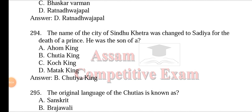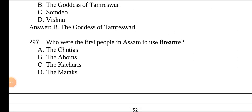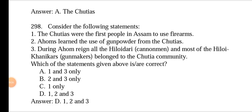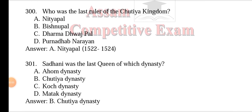The original language of the Sutias is known as the Tibeto-Burman language. The temple of Tamreswari Mai was built by a Sutia king and was dedicated to the goddess Tamreswari. The Sutias were the first people in Assam to use firearms, which later inspired the Ahoms. The Ahoms learned the use of gunpowder from the Sutias. During the Ahom period, most of the Hilloidari cannon men and Hilloy Khanikar gun makers belonged to the Sutia community. The Sutia kingdom was annexed to Ahom territory after the Battle of Mathu Dang. The last ruler of the Sutia kingdom was Nitya Pal.